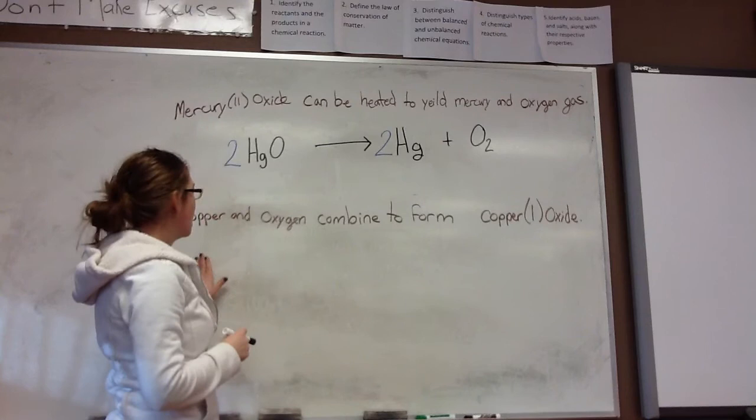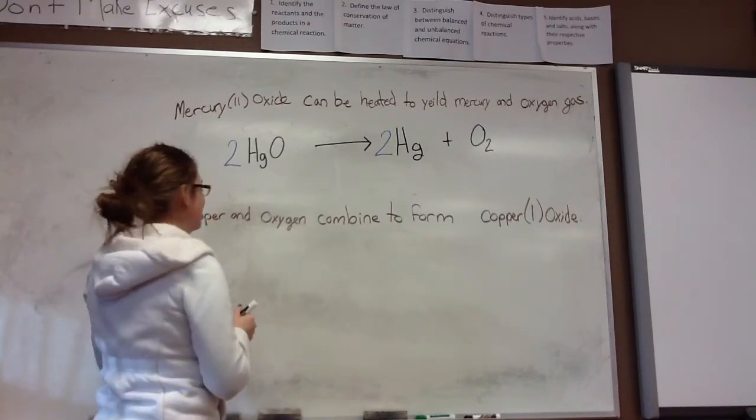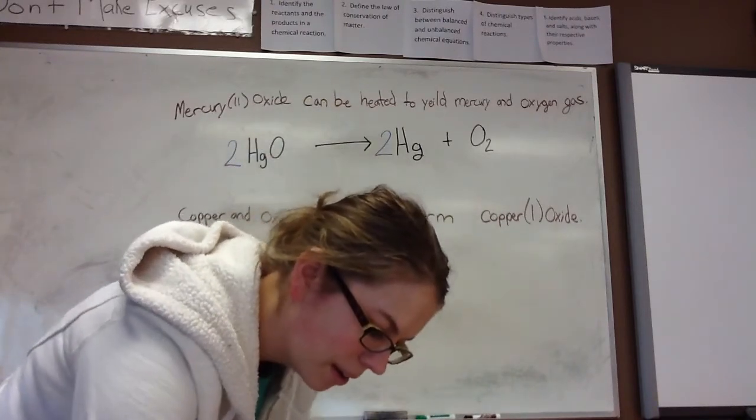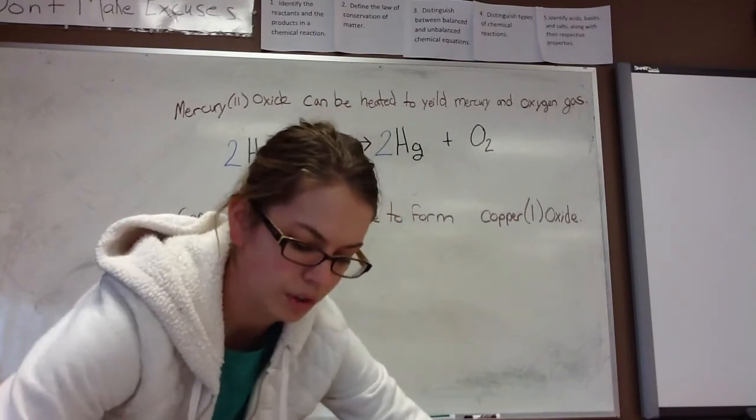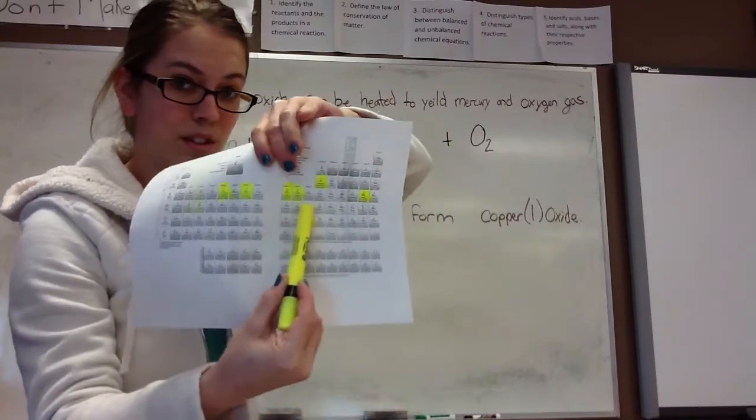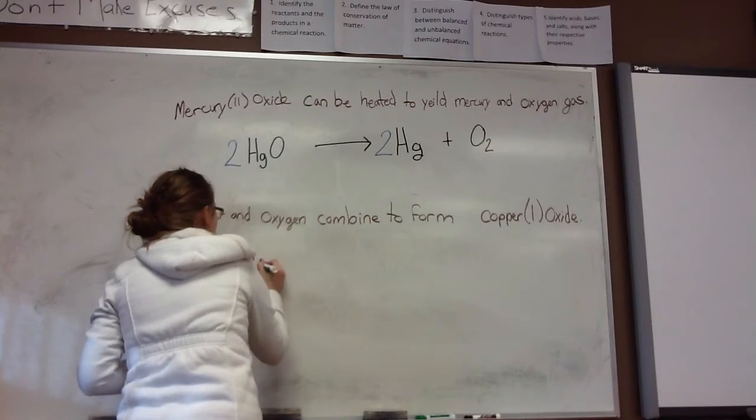And we'll go on. So here we see copper and oxygen combine to form copper oxide. On your periodic table, the symbol for copper is Cu. Right here. I see you. Or you see me rather, I actually don't really see you. Cu.